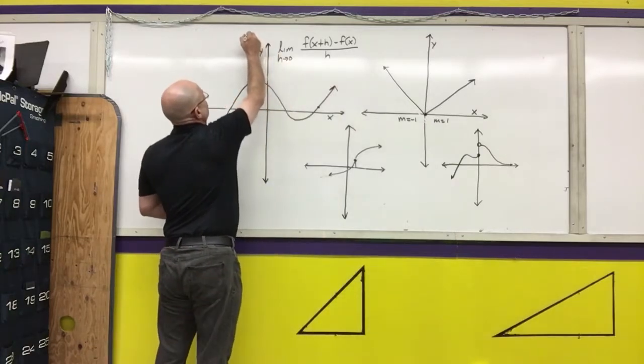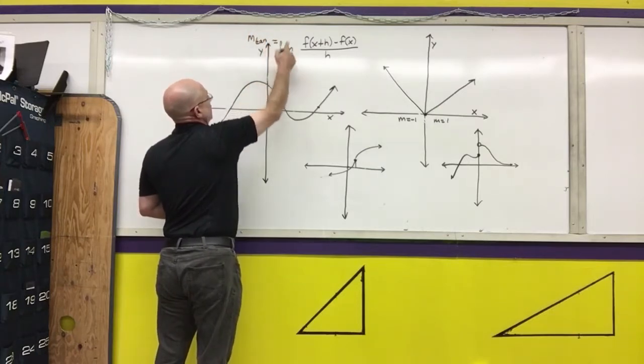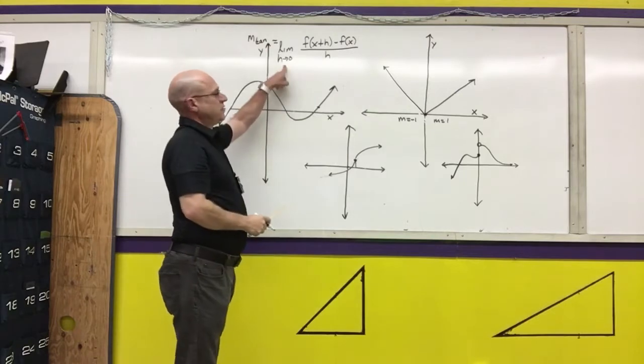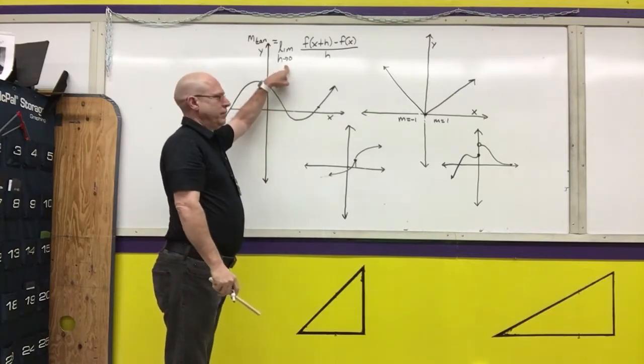We're actually going to formalize this and say that the slope of the tangent line is identically equal to this limit. So if this limit does not exist, I cannot have a tangent.